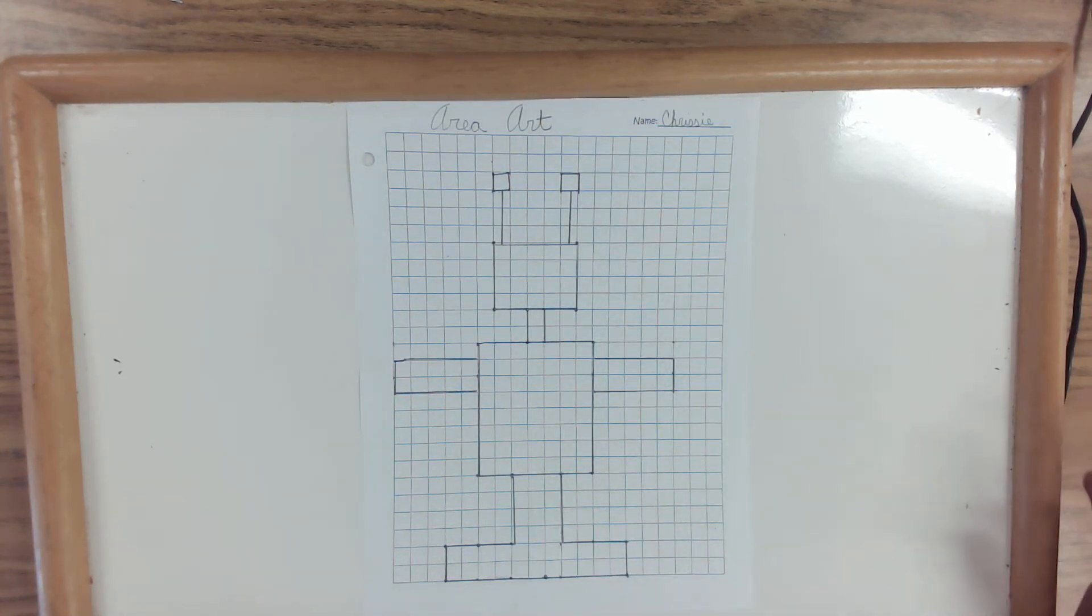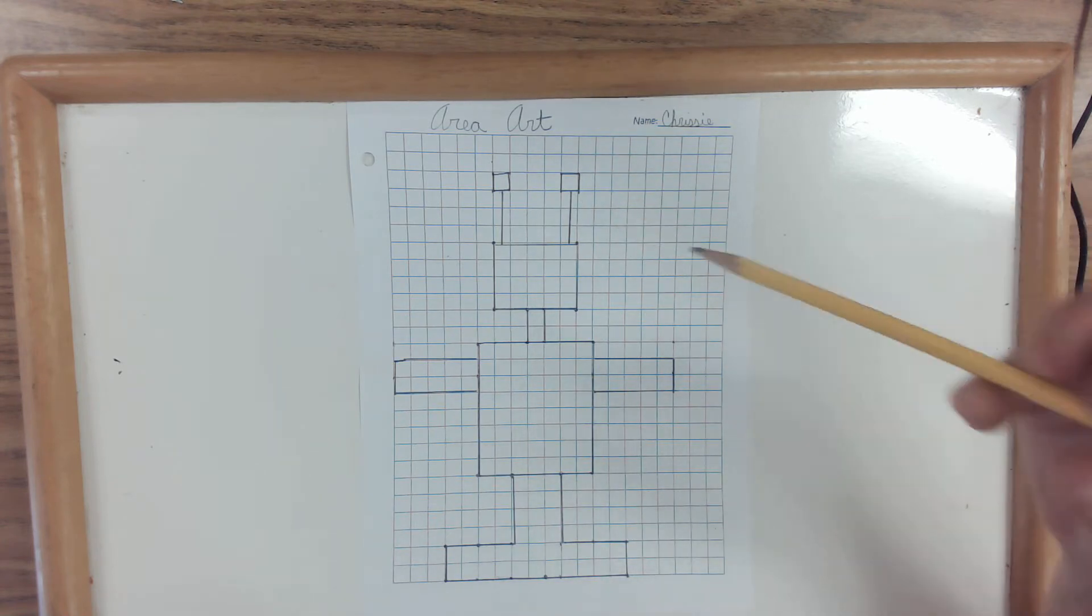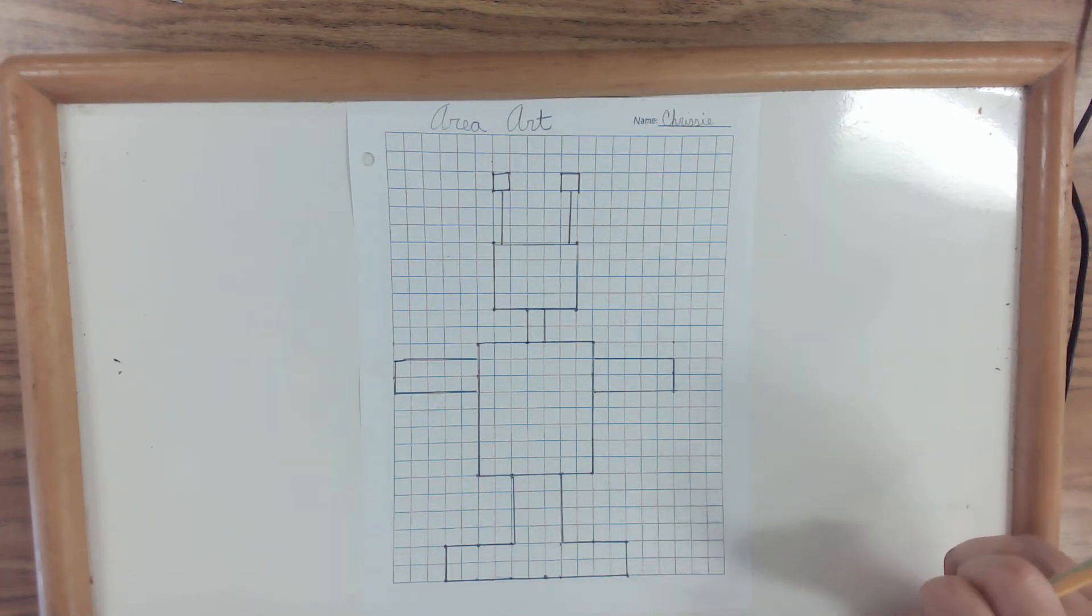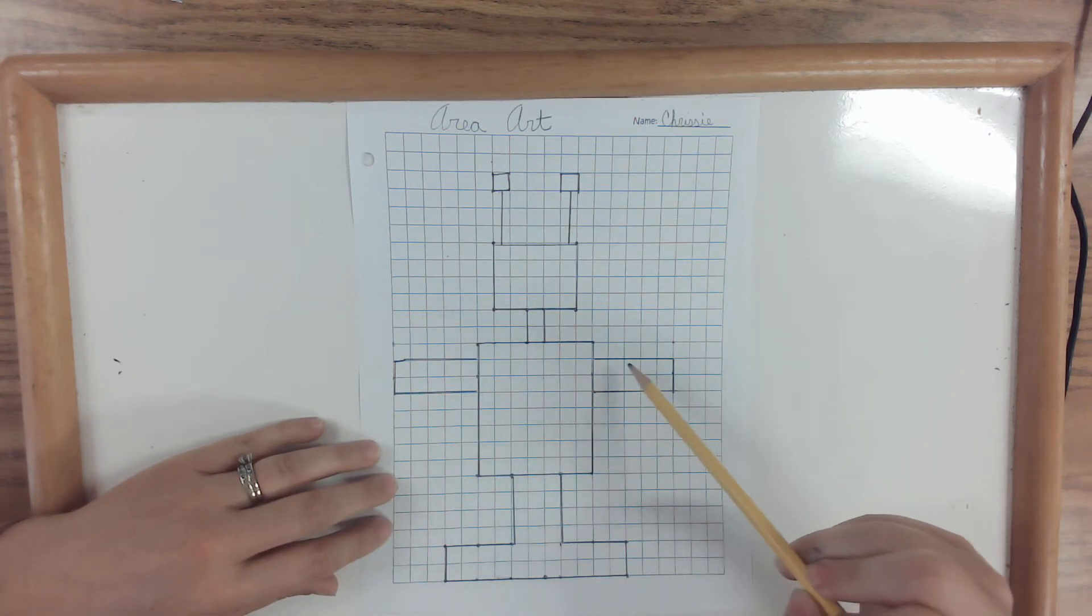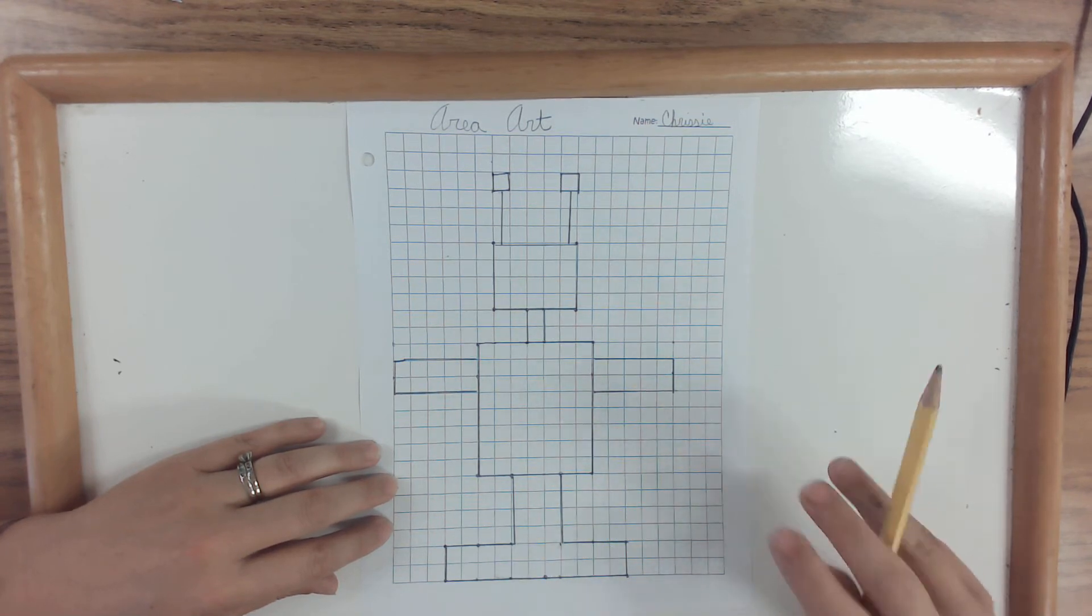Now, I know that the area of rectangles and squares is base times height. But this is not a regular shape. I have a lot of squares and rectangles in here. So, what I do is I can just look at all the different pieces of my drawing.